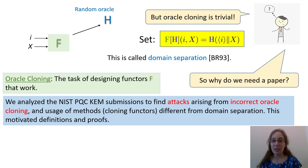We looked at submissions to the NIST post-quantum cryptography standardization effort that were building key encapsulation mechanisms. They were using multiple ROs and then, explicitly or implicitly, implementing them via a cloning functor. We found two things. First, some cloning methods were wrong, to the point where we were able to give attacks breaking the schemes. Second, there were choices of cloning functors made and used that were different from domain separation. We decided to step back to consider the problem theoretically, giving definitions and proofs, and then coming back to classify and, when possible, validate oracle cloning methods in the submissions.